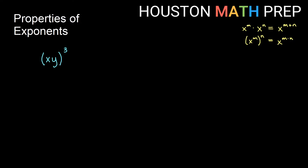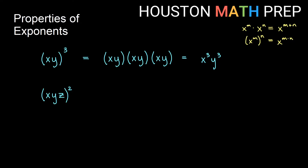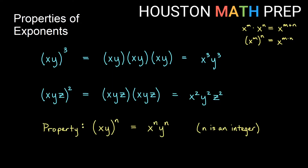If we have a single term in parentheses raised to a power, that means we have that many copies of the whole thing. So x times y all cubed is three copies of x times y, giving x cubed and y cubed. This only applies to a single term. Similarly, xyz all squared is two copies of xyz, so we get x squared, y squared, z squared. The property: a power outside parentheses on a single term can be applied to each factor inside.